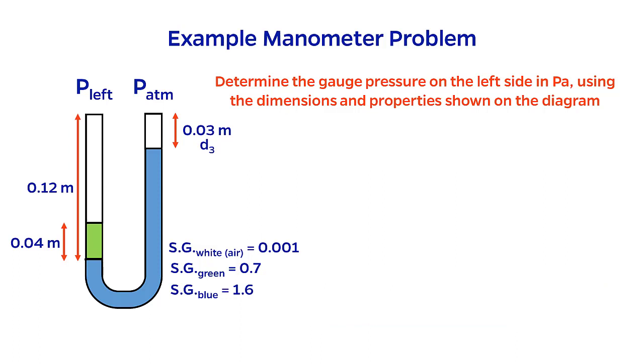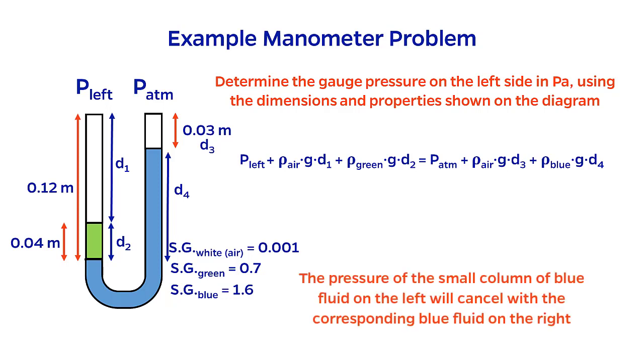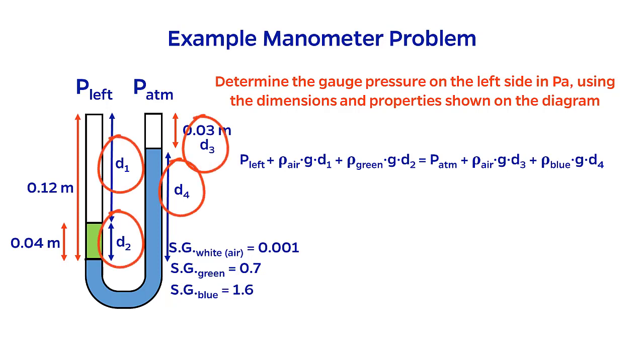So, let's sum the pressures on the left. We have p left, as the diagram says, and then a column of air, a column of green fluid, and a column of blue fluid. Notice that I've defined my distances by assigning each one a numbered subscript. On the right, we'll have atmospheric pressure, a column of air, and a column of blue fluid.